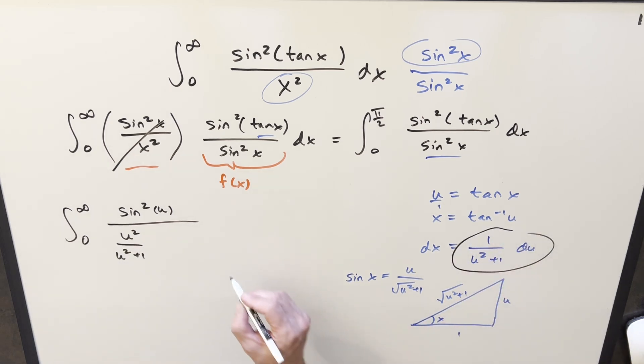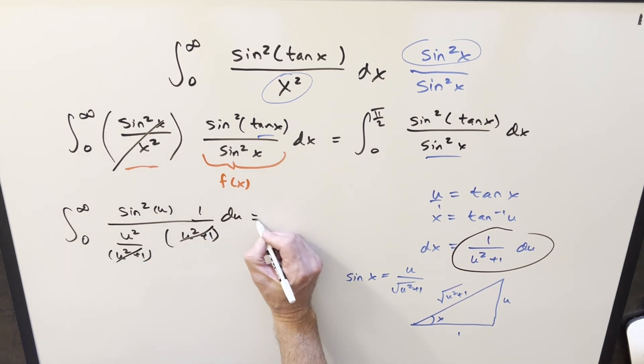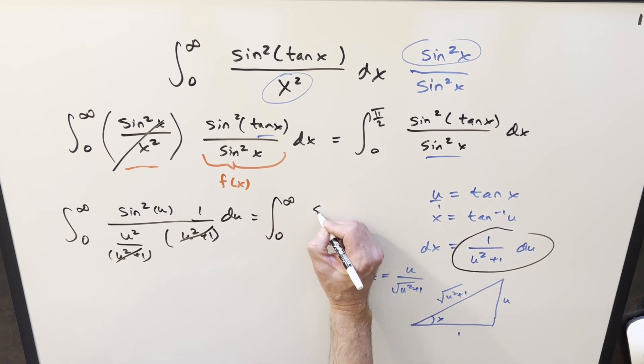dx is going to be all this stuff here. So let's write it carefully. We'll multiply in u squared plus one here. u squared plus one is going to cancel. And what we're left with is the integral that I didn't want to do this way before. This is what we had a week back, which is just sine squared over u squared. But now for this thing, we can use the formula.